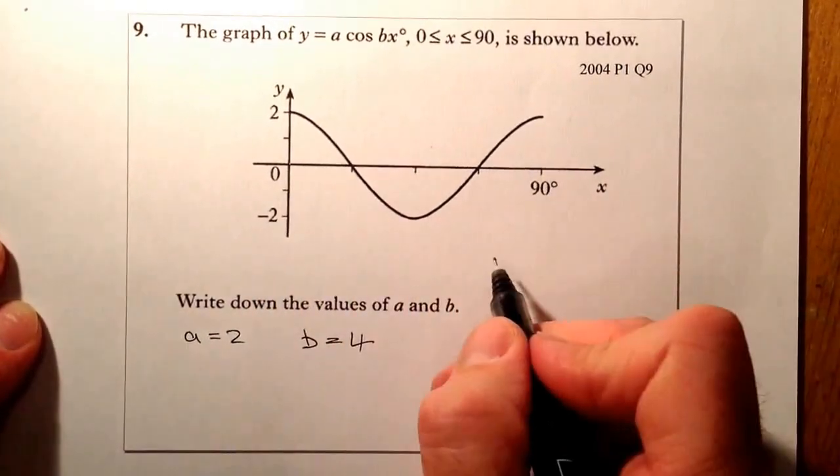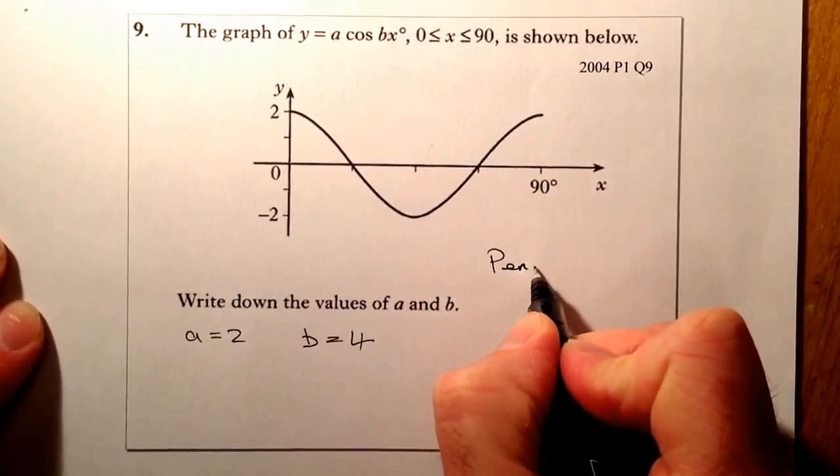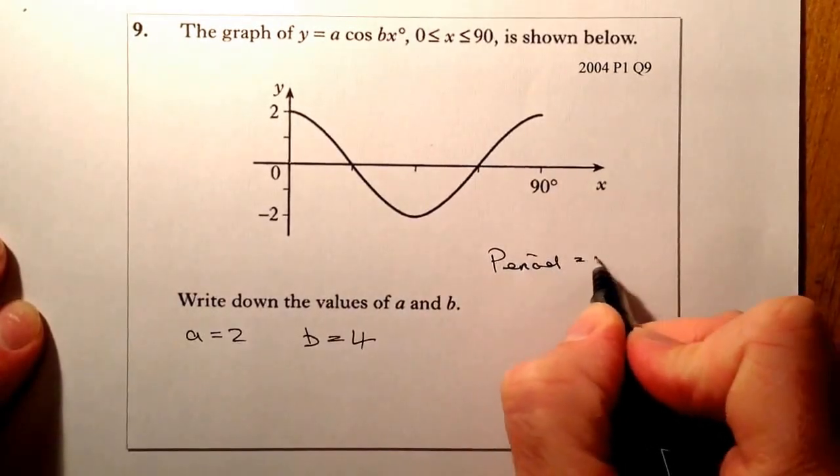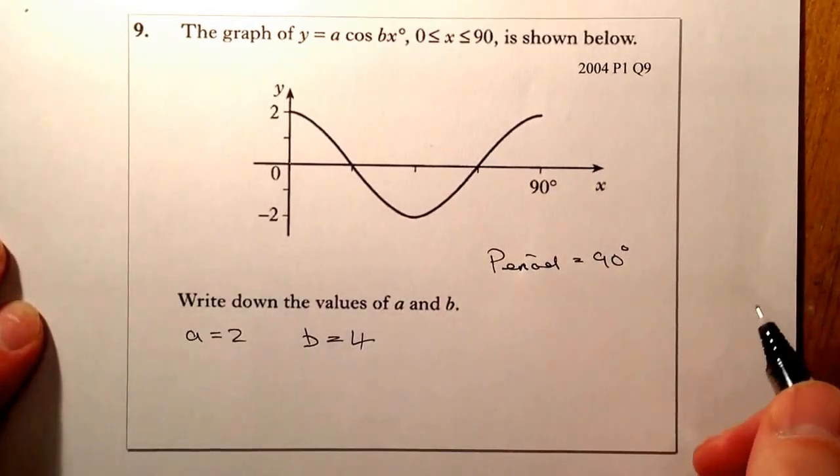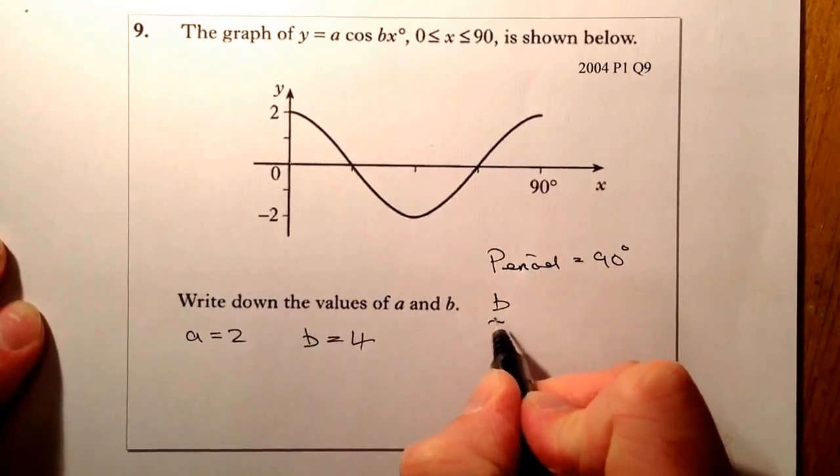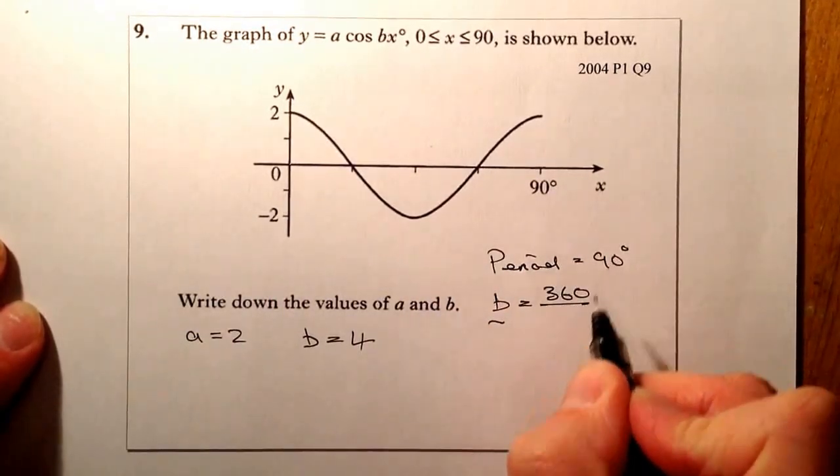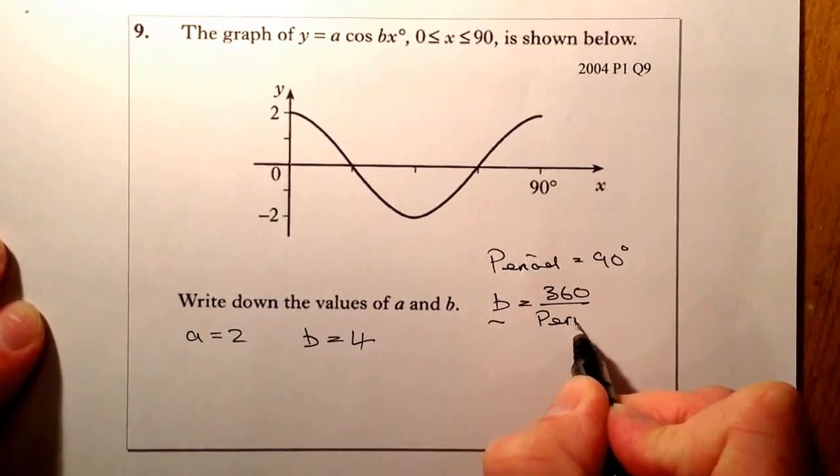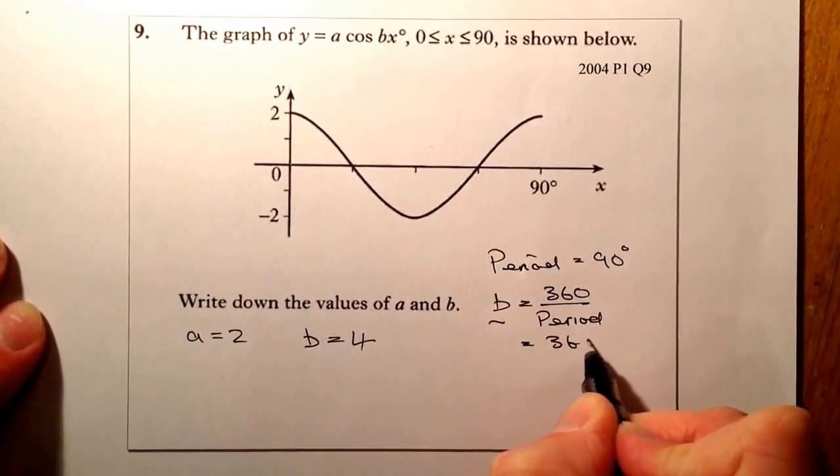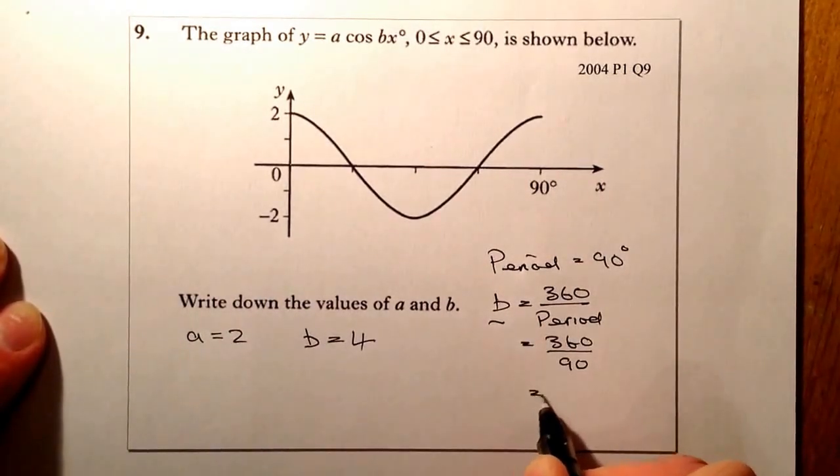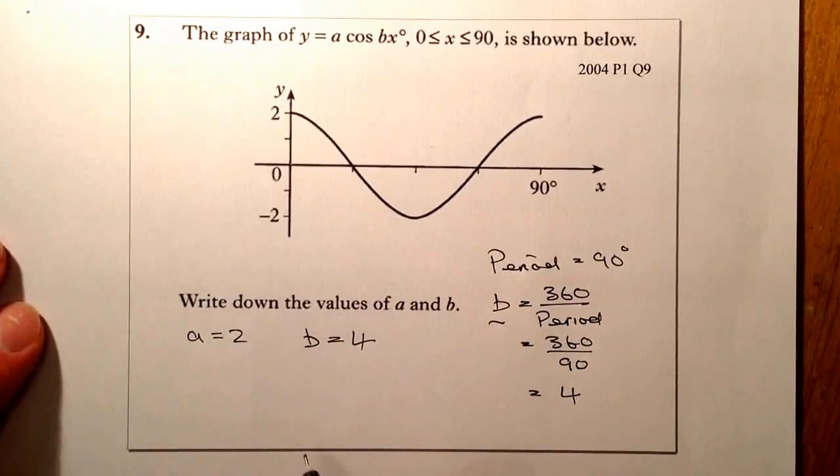The other way I can work that out, I can look at the period of this graph. The period is equal to 90 degrees, and if I wanted to work out what the value of b was going to be, I can divide 360 degrees by the period, which is 360 divided by 90, and what that gives me is a value of 4.